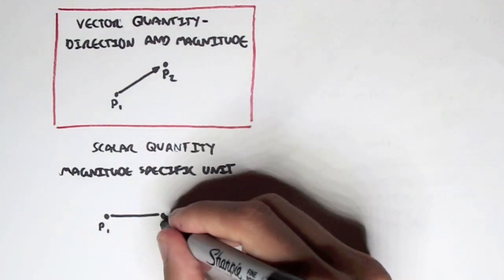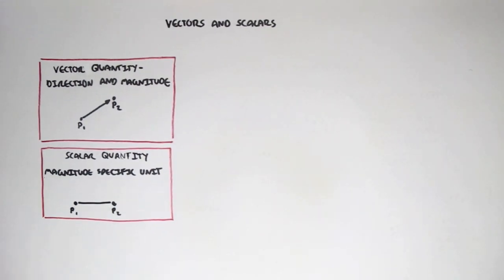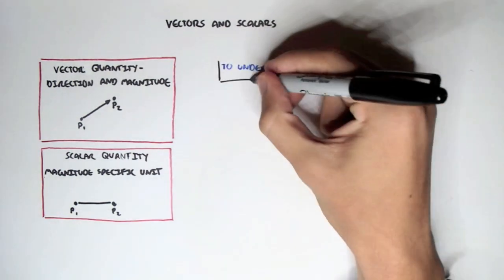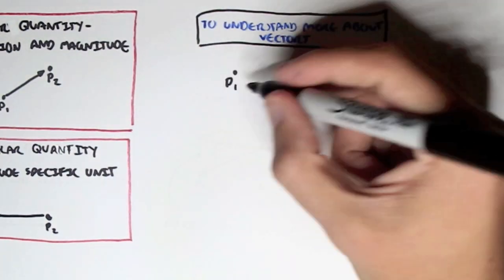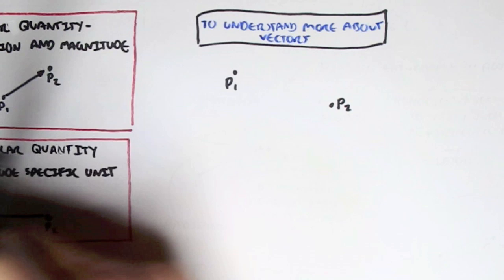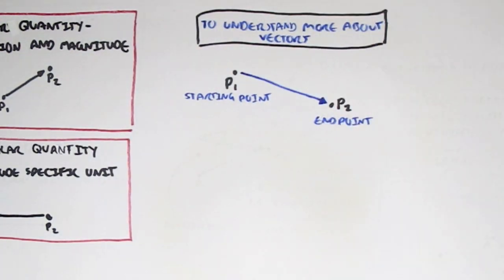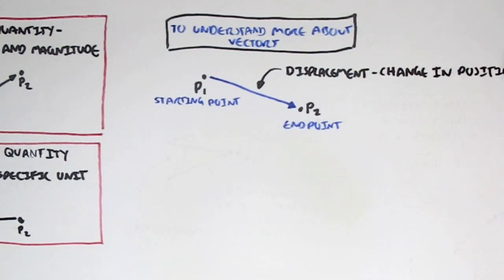Now let's understand a bit more about vectors. To understand vectors, we have to know a few terms. For example, if p1 was our starting point and p2 was our end point, and a vector has a direction — so from p1 to p2 — this line represents what's called displacement: a change in position from point 1 to point 2.